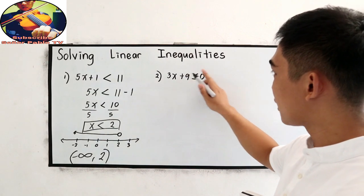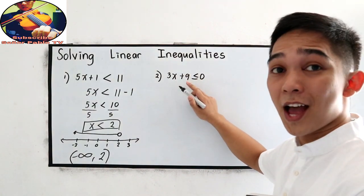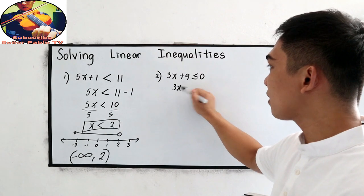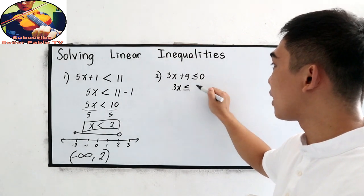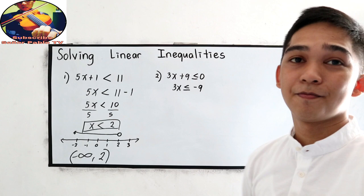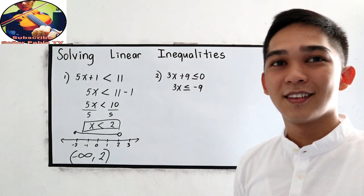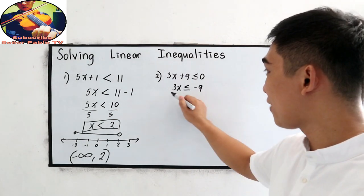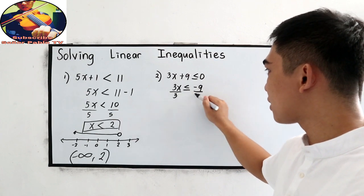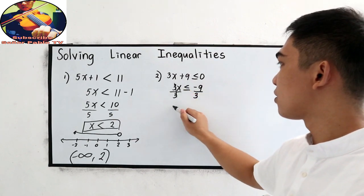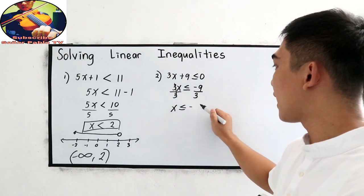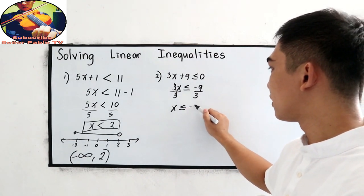First, transpose positive 9: 3x is less than or equal to negative 9. Next, divide both sides by 3, so x is less than or equal to negative 3.